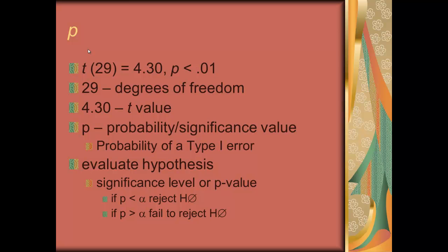What is P? P is the probability significance value — the probability of a type 1 error. Here's how you evaluate the hypothesis: look at the P or significance level. If P is less than your alpha level, which we usually set at 0.05, we reject the null hypothesis. If P is greater than the alpha level, we fail to reject the null hypothesis. Since Pennebaker's P is less than 0.01 and his alpha was 0.05, he rejected the null hypothesis.